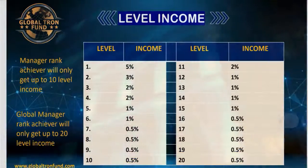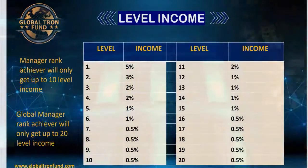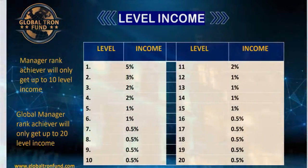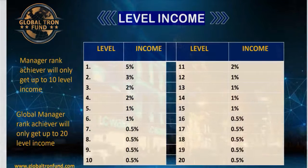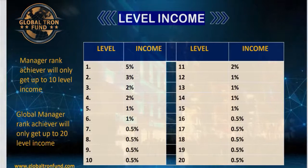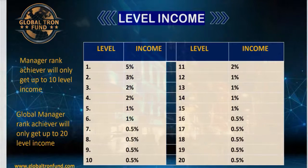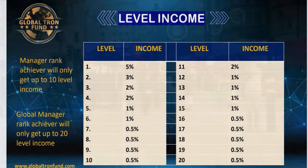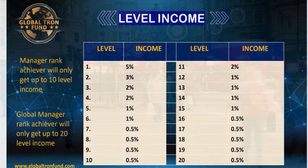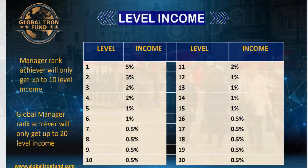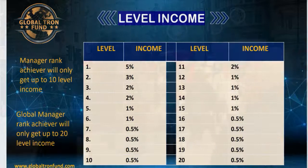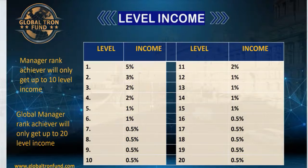Now let's talk about the level income. Manager rank achievers will get up to 10th level income, and global manager rank achievers will get up to 20th level income. In the 1st level you get 5%, 2nd level 3%, 3rd level 2%, up to 6th level 1%, and 7th level 0.5%.